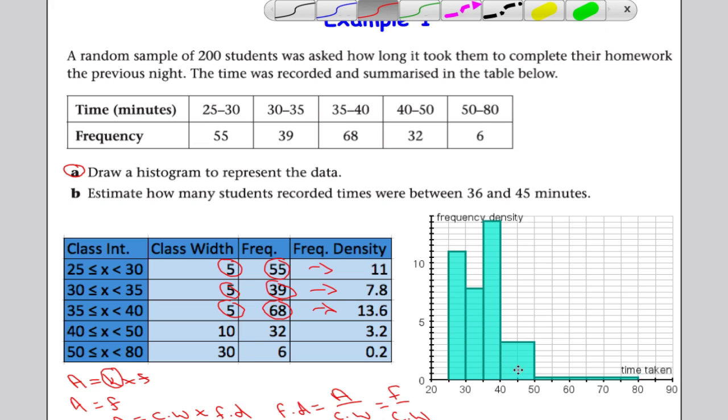If I calculate the area of this bar here, that will tell me the frequency for that class interval. I would just multiply 10, the class width of 10, and the height of the bar would be 3.2. And 10 times 3.2, you can see, tells me 32. So I know that the frequency for this part is 32.